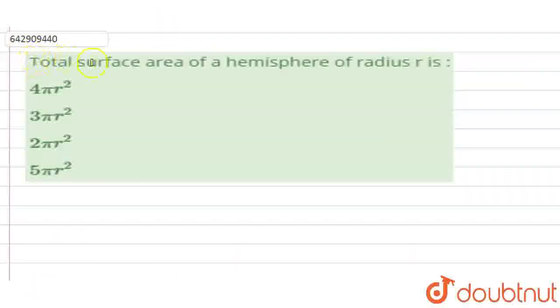So, this is my dear question. The total surface area of the hemisphere of radius r is 4πr², 3πr², 2πr² or 5πr². Look,